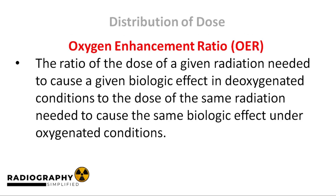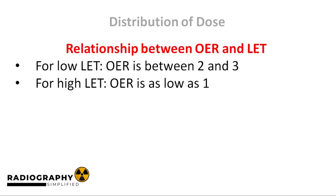The next term we'll discuss is the Oxygen Enhancement Ratio, or OER. The body tissues are more sensitive to radiation when they are oxygenated than when they lack oxygen. This is known as the oxygen effect. The OER is simply the ratio of the dose of a given radiation needed to cause a given biologic effect in deoxygenated conditions to the dose of the same radiation needed to cause the same biologic effect under oxygenated conditions. For low LET radiation sources, the OER is between 2 to 3. This implies that the radiation is 2 to 3 times more powerful in producing biologic effects when the cells are oxygenated as compared to when the cells are deoxygenated.